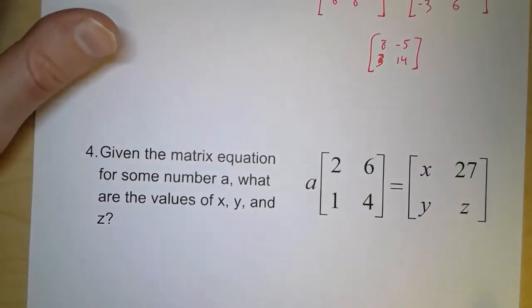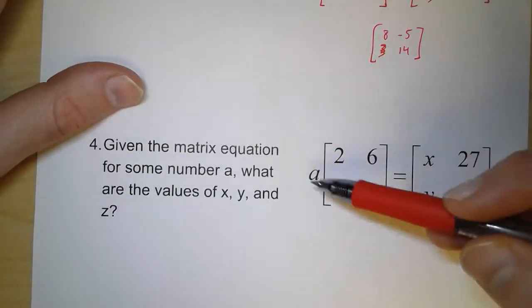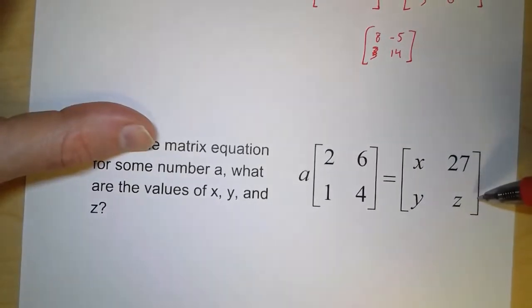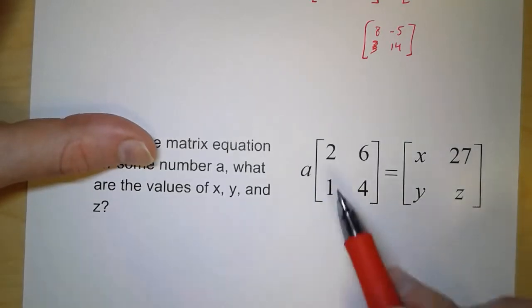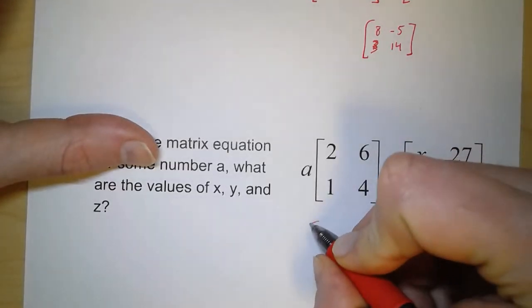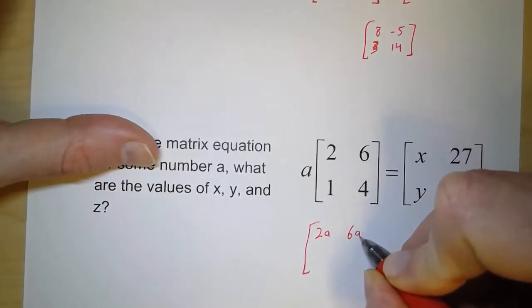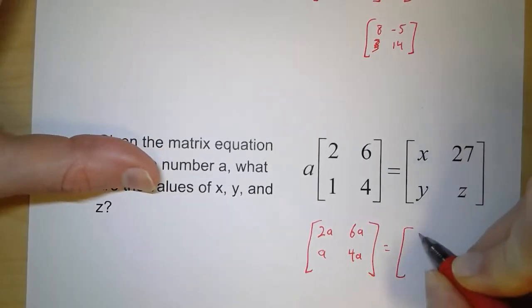So for the fourth one, a lot of variables here. Here we've got this matrix, and it's being multiplied by the scalar A. And we have these three unknowns, x, y, and z. So what I'm going to do is I'm going to multiply in the scalar A. So we have 2A and 6A on the top row. And then we have A and 4A on the bottom row. And that's equal to x, 27, y, and z.